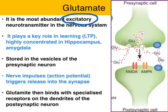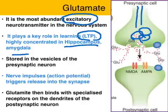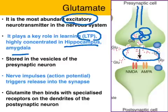Glutamate plays a key role in long-term potentiation. It's highly concentrated in the hippocampus and the amygdala. It's stored in the vesicles of the pre-synaptic neuron, and when an action potential is generated, these glutamate neurotransmitters are released into the synapse and bind with specialised receptors on the post-synaptic neuron, particularly NMDA receptors.